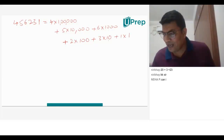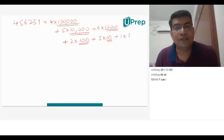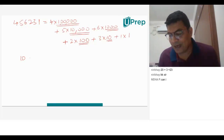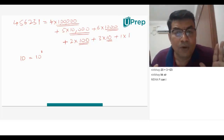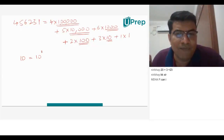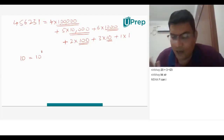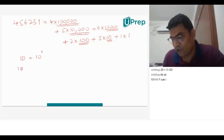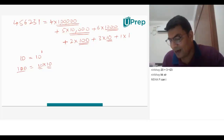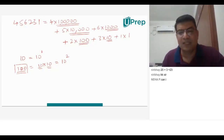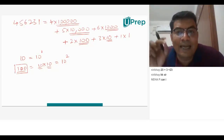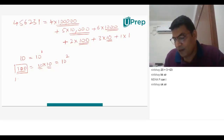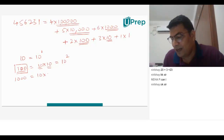We have 10 here, 100, 1,000, 10,000, and 1,00,000. Now, 10 can be written as 10 to the power of 1. When we have 100 — 100 is nothing but 10 into 10, so we write it as 10 squared. 1,000 is nothing but 10 into 10 into 10, so we call it 10 to the power of 3. You are multiplying 10 three times, therefore we call it 10 to the power of 3.